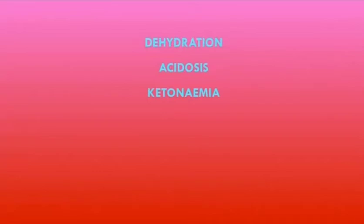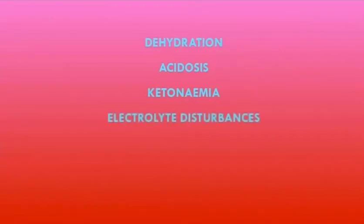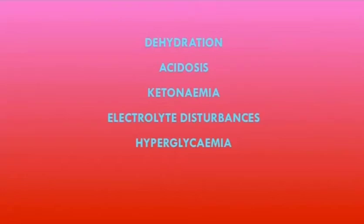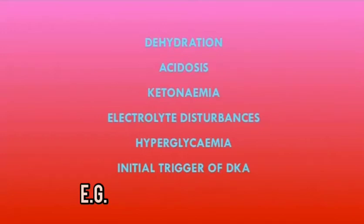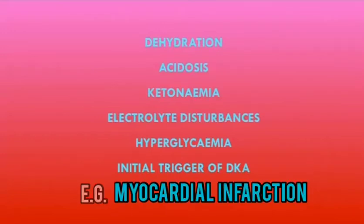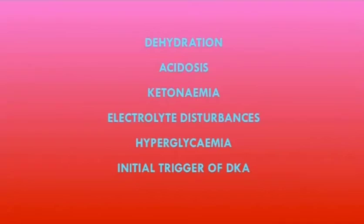If you correct the ketonemia, this will help to correct the metabolic acidosis. Patients are also at risk of developing electrolyte disturbances, particularly potassium abnormalities. DKA is characterized by hyperglycemia, though correcting it is not as high a priority as correcting other complications, as these will likely kill the patient first. Finally, it is important to manage the initial trigger of DKA, such as infection or tissue ischemia like a myocardial infarction.